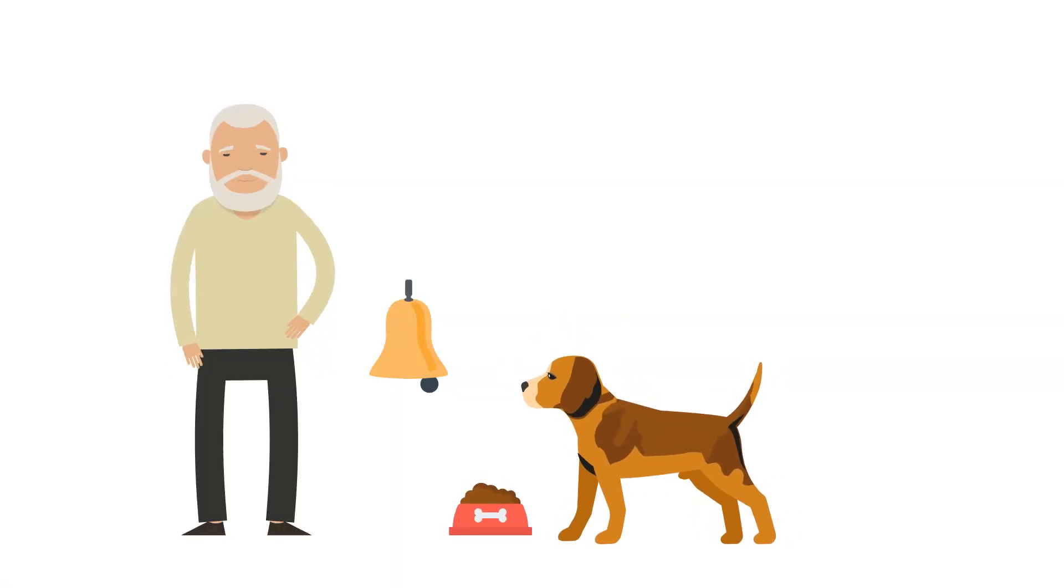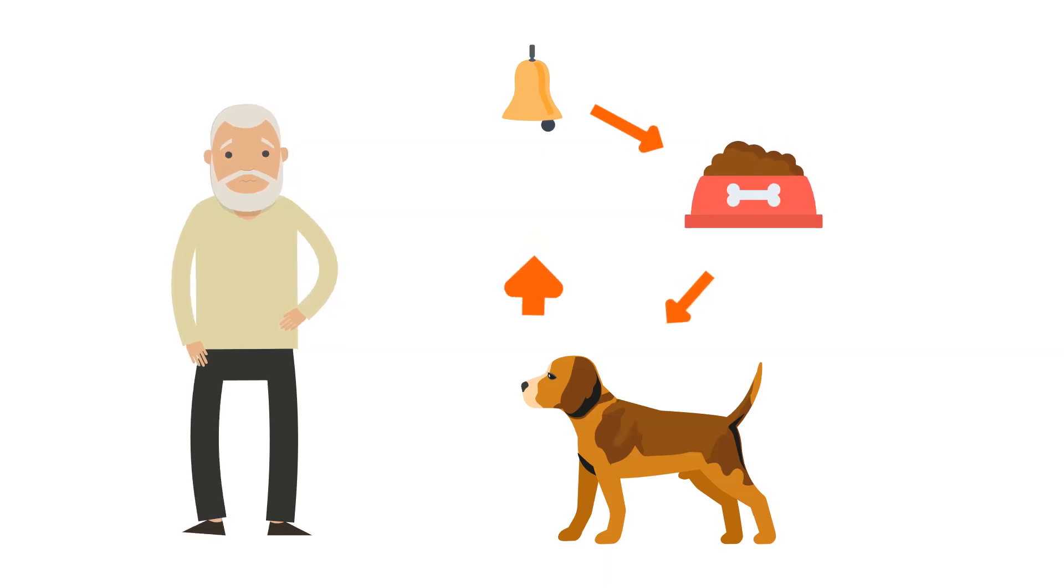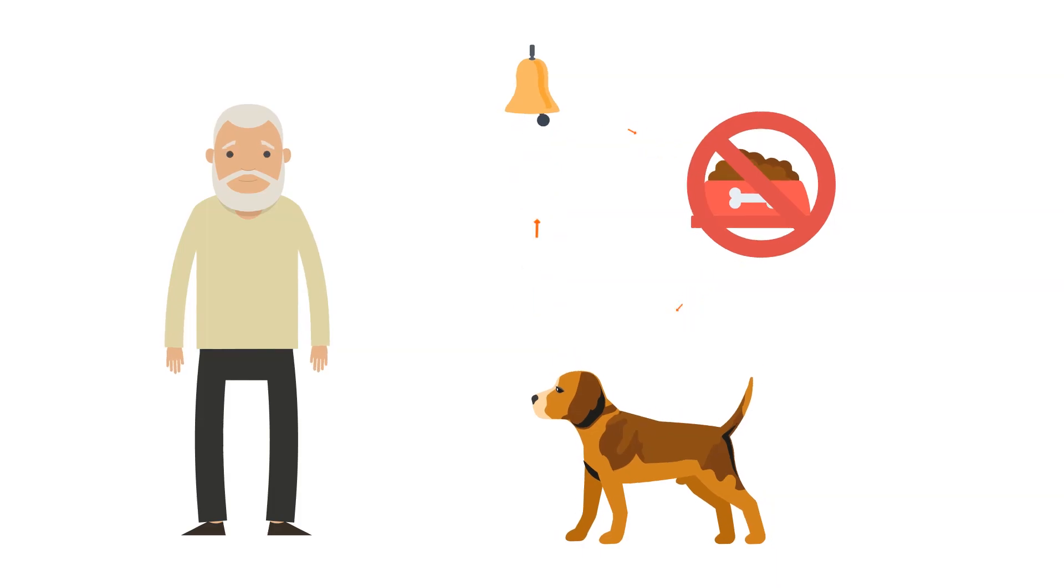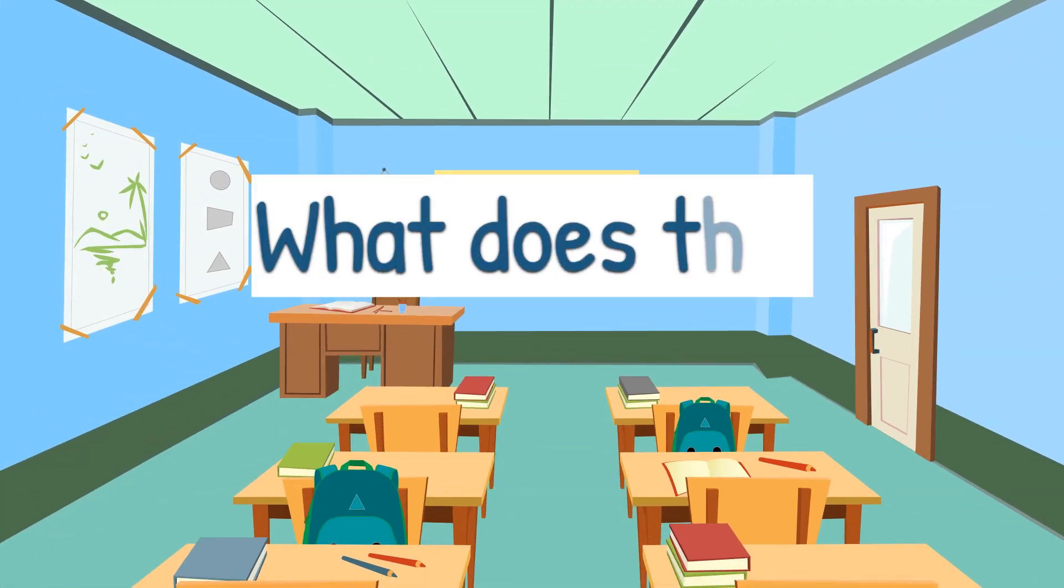Here's where it gets interesting. Pavlov rang a bell every time he fed the dogs. Initially, the bell meant nothing to them, but after repeated pairings, the dogs began to associate the bell with food. Soon, they started salivating just at the sound of the bell, even when no food was presented. This is classical conditioning in action.